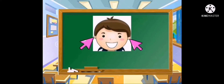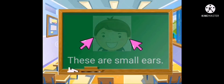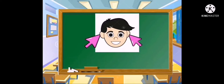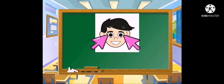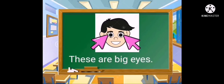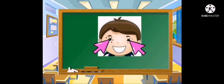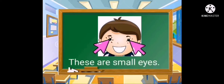Next, what are these? Well done, children, these are small ears. Next, what are these? Very good, children, these are big ears. We're down to two more. Next, what are these? Very good, these are big eyes. And last, what are these? Well done, children, these are small eyes.